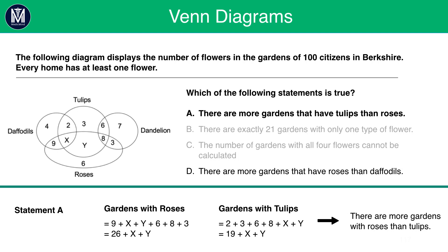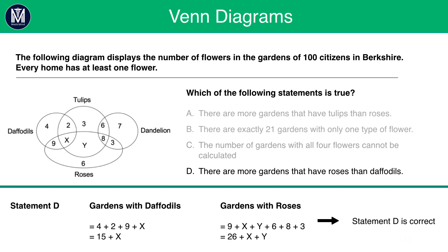Statement A is the next easiest statement to solve. There are more gardens that have tulips than roses. Now, if we look at tulips and we look at roses, both have X and both have Y. This we can use to our advantage. If we add up the number of citizens that have roses, we get 26 plus X plus Y. If we do the same for tulips, we get 19 plus X plus Y. Now, the value of X and the value of Y are definitely going to be positive. This is significant because we know that no matter what X and what Y are, gardens with roses will be way more than gardens with tulips, simply because 26 is larger than 19. We can therefore rule out A as well, and therefore the answer is D.